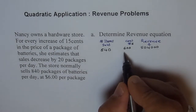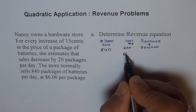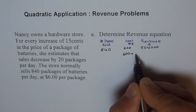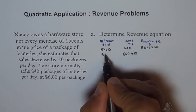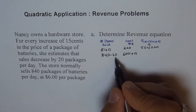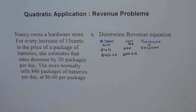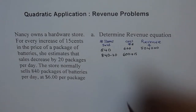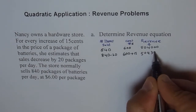If I increase the price by 15 cents, the cost becomes 615 cents and the items sold become 840 minus 20, which is 820. Multiplying 820 times 615 gives us 504,300 cents — more revenue. So with fewer sales but a higher price, you're actually making more revenue.